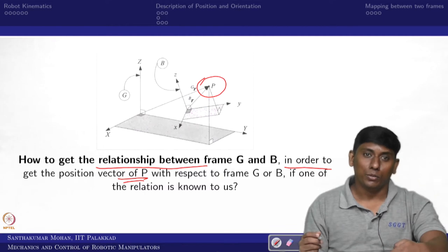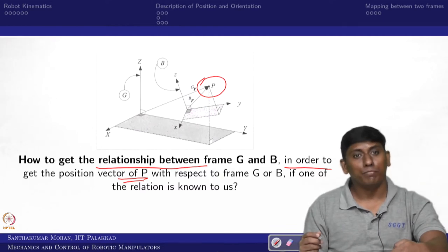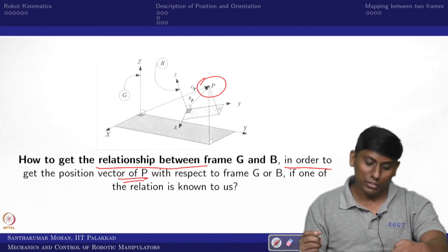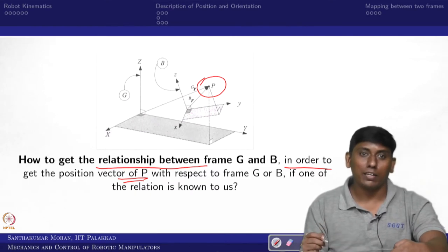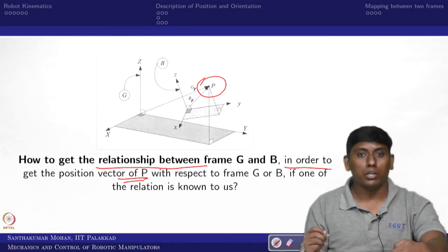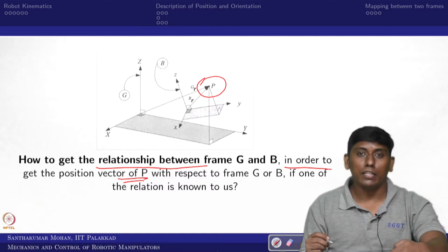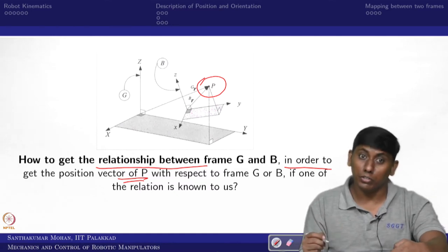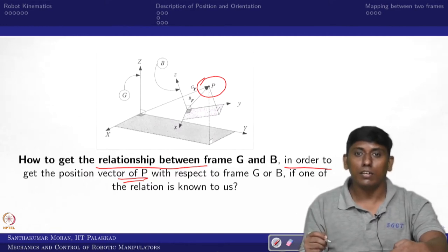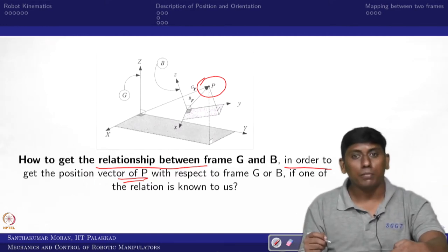Welcome back to the course on Mechanics and Control of Robotic Manipulator. Recalling the last lecture, we stopped at a particular slide where the main interest was getting the relationship between frame G and B — specifically, how to get the position vector of point P with respect to either G or B if one of the relationships is known.